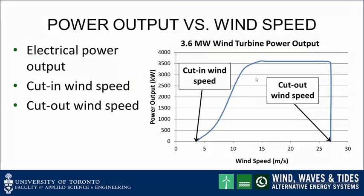What you really want to know, if you're planning a wind turbine or wind farm installation, is how the power output varies with wind speed. The graph on the right shows typical data provided by a wind turbine manufacturer — a plot of electrical power output as a function of wind speed — representative of a very large 3.6 megawatt wind turbine. Note that there is no power output until the wind reaches approximately 3.5 meters per second. This is called the cut-in wind speed; no electrical power is produced below this speed, as the turbine must first overcome internal friction before producing net output.